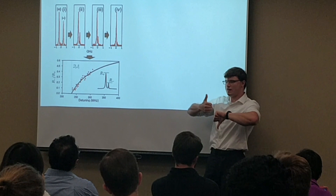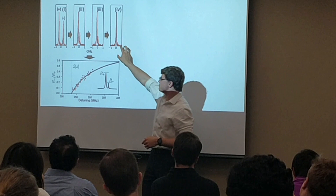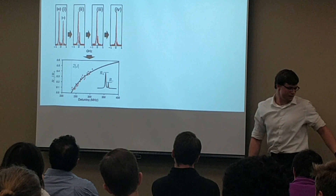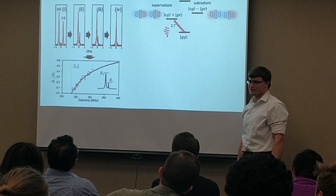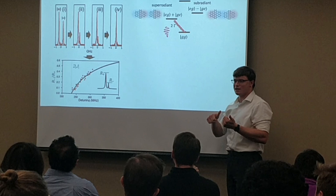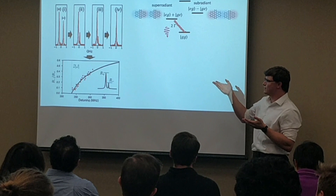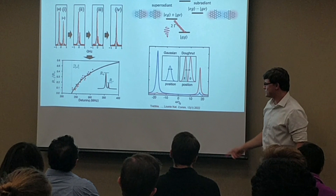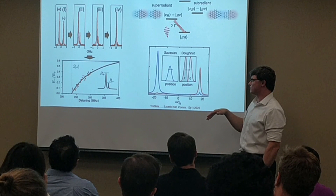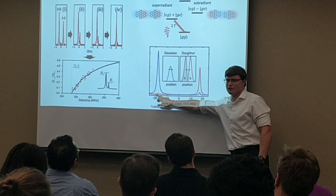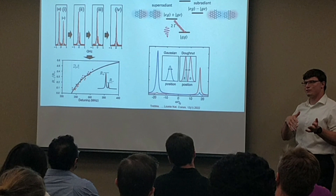You can use the point at which the subradiant peak disappears to measure the interaction strength. The position of the subradiant state relative to the superradiant state also tells you about the orientation of the dipoles. It was also shown by Rahim Lunas that if you make anti-symmetric light, like a donut beam, you can selectively excite the subradiant peak — which is a hint toward one of the goals of selectively interacting with the subradiant state despite its longer lifetime.